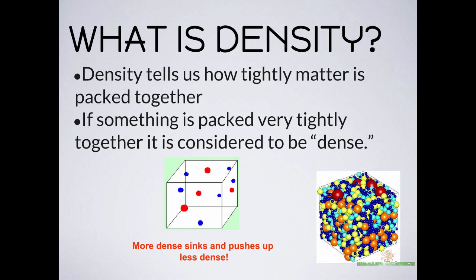Density is very important. It tells us how tightly things are packed together. If something is very tightly packed on a molecular basis, it is considered to be dense. Obviously, the block on the left is less dense than the block on the right. This is really important in earth science — this is why we talk about it at the beginning of the year, because density comes up in many units. Things that are more dense sink, and they push up the things that are less dense.